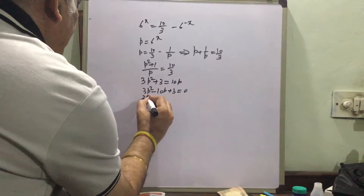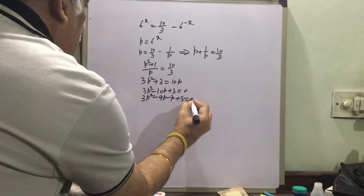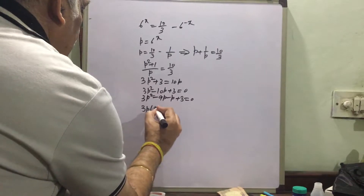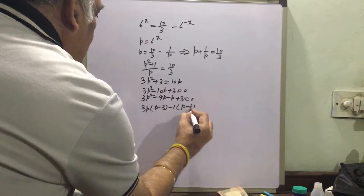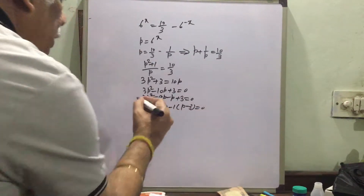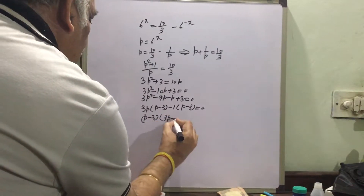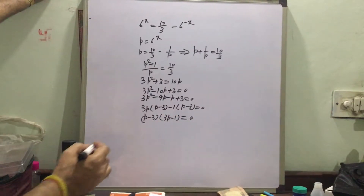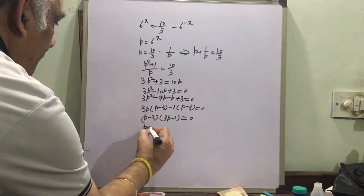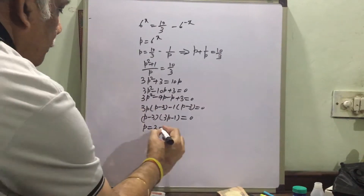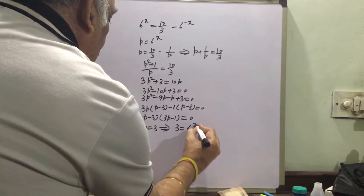So we can write: 3p squared minus 9p, minus p, equal to 0. We take 3p common, giving p minus 3, minus 1 times p minus 3, equal to 0. Taking p minus 3 as a common factor, we write: (p minus 3)(3p minus 1) equal to 0. If p is equal to 3, that is p equals 3, from this factor, we will have 3 equal to 6 raised to the power x.